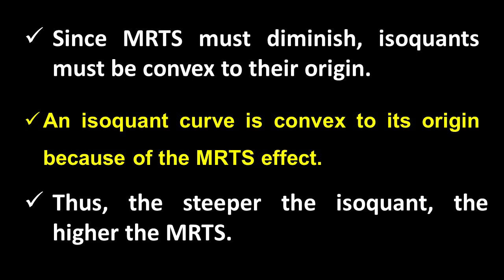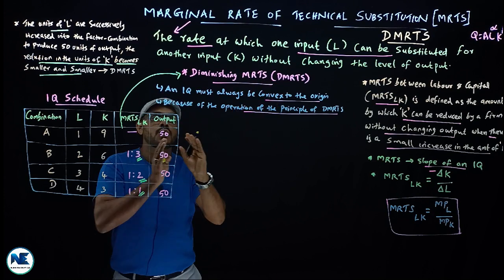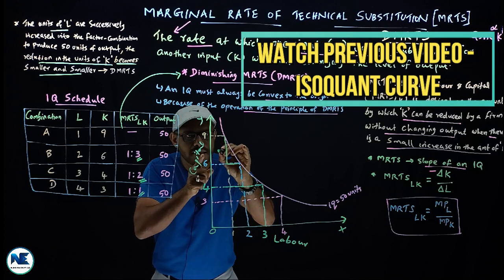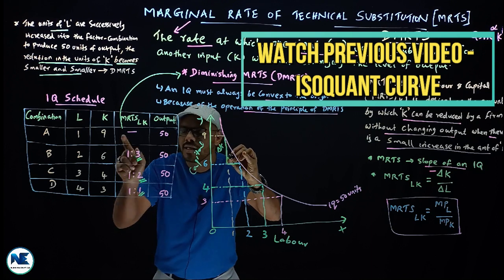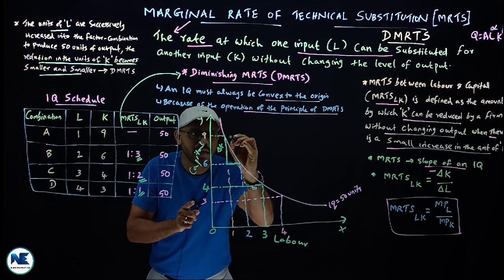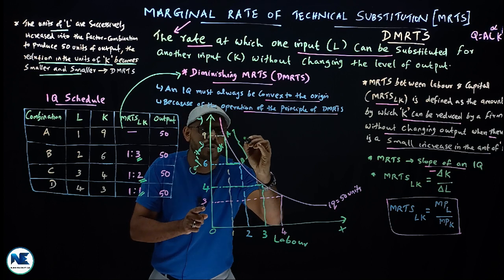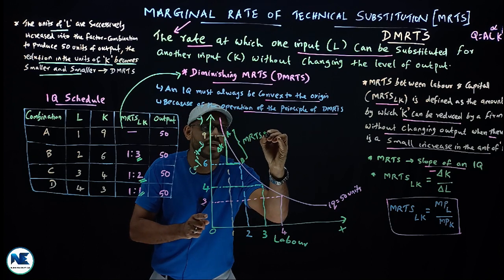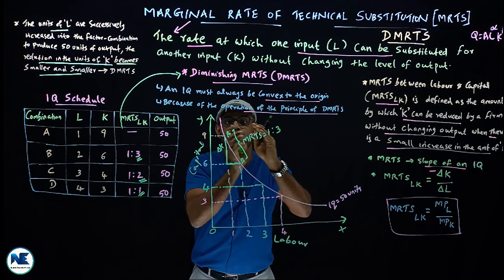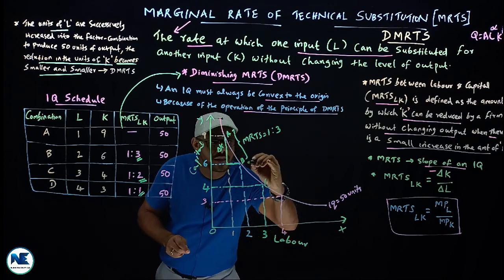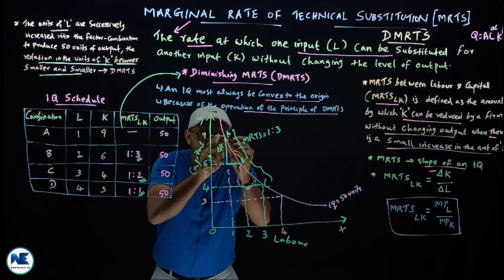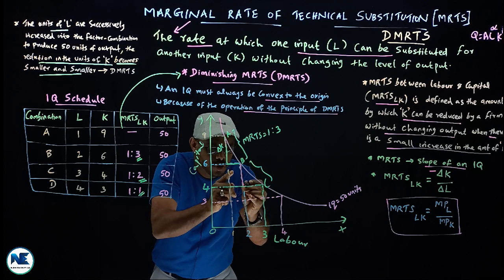We can prove diminishing MRTS through the isoquant curve. The MRTS slope is delta K over delta L. Between points A and B, three units of capital change for one unit of labor - MRTS equals 3:1. Between B and C, the MRTS is 2:1. The vertical distance is diminishing.